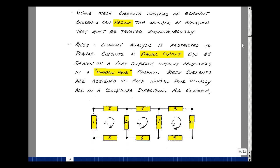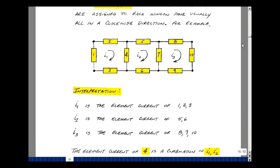Let me illustrate this on an example. Here I've got 10 elements, drawn in such a way that no wires cross over, and it's a flat image. The currents that are flowing in what we call these window panes are going to be called our mesh currents.